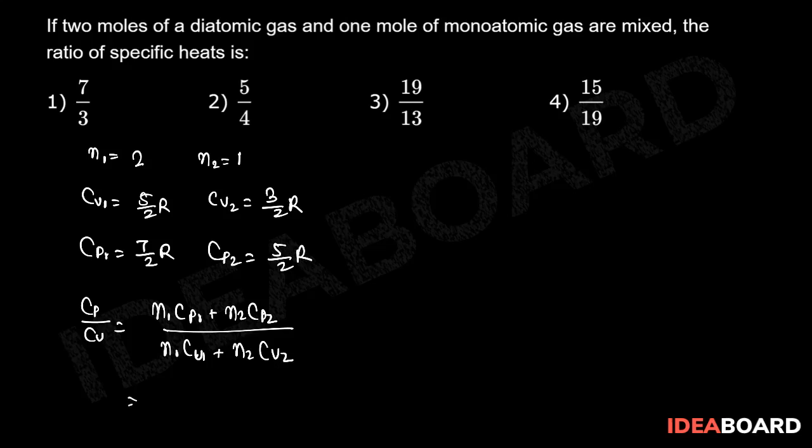So now we put the values in this equation. So we will write 2 into 7 by 2 into R plus 1 into 5 by 2 into R divided by 2 into 5 by 2 R plus 1 into 3 by 2 of R.